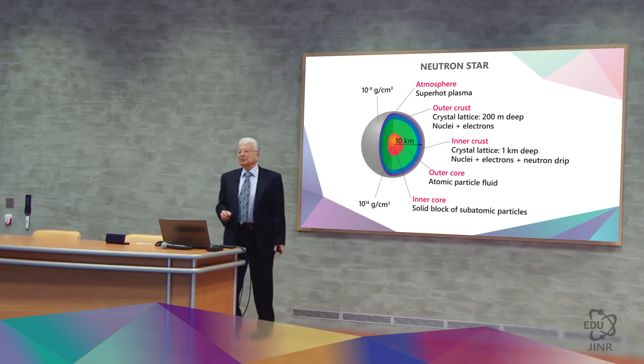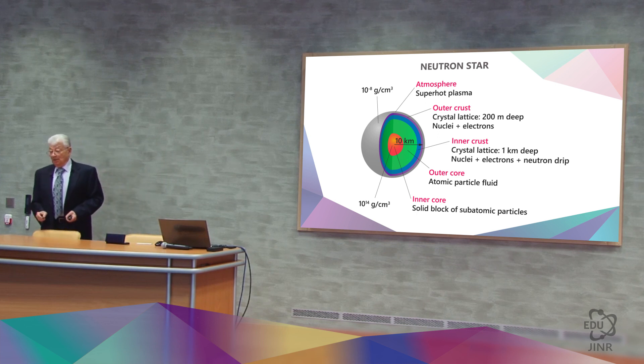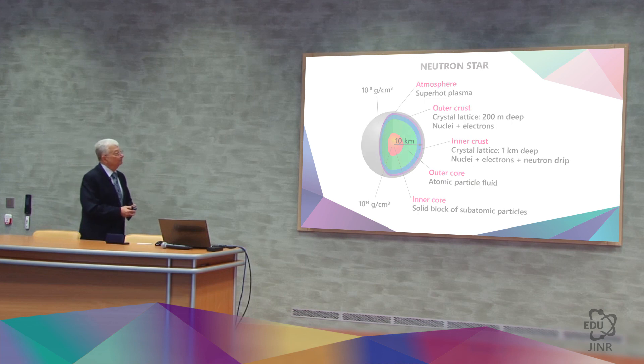If we move even deeper into the star, the density is higher than that of nuclear density. It is very interesting that at a nuclear density level of a neutron star, it is possible to obtain nuclei with masses of 500 mass units. You might remember that we reached a mass of 300 mass units through artificial synthesis.